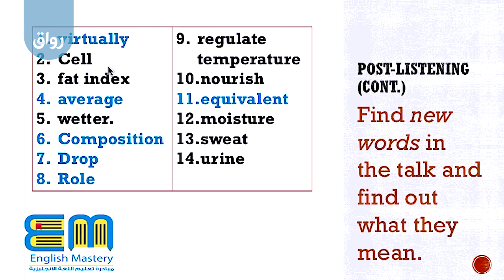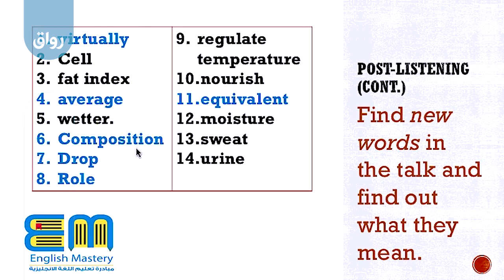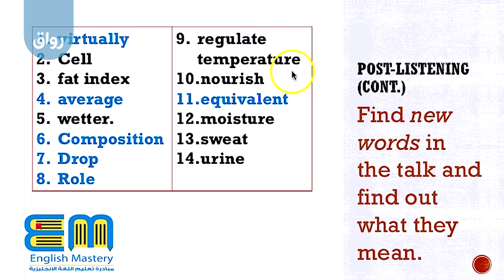The next word here is 'cell', then 'fat', then 'index', then we have 'average', then we have 'composition'. Then we have 'drop' — properly in the fall. Then we have 'the role' — role.